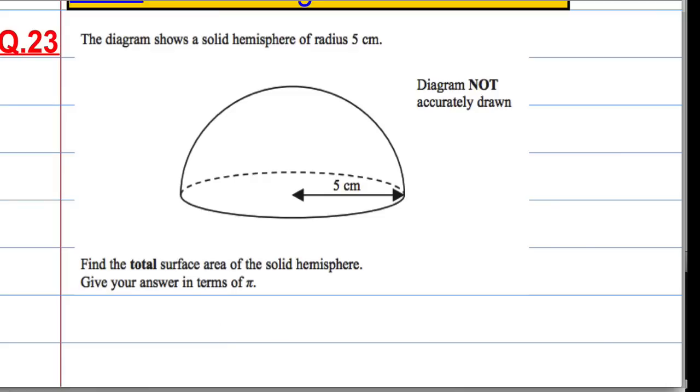Now, we're actually not given the formula for a hemisphere in the formula book at the start of the paper, but we do know the formula for the surface area of a sphere. So, the surface area of a sphere is equal to 4 pi r squared.